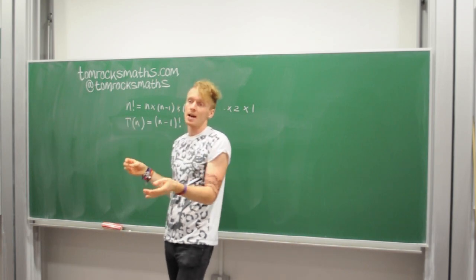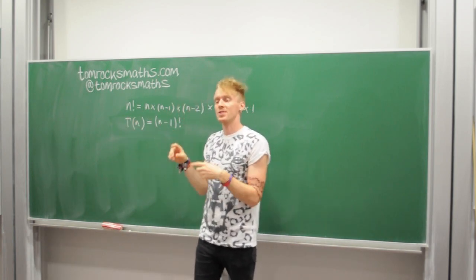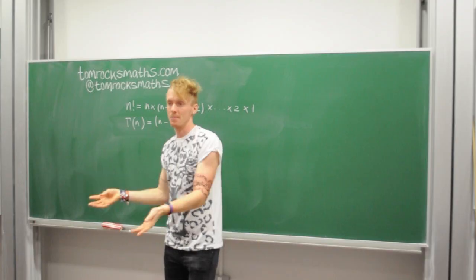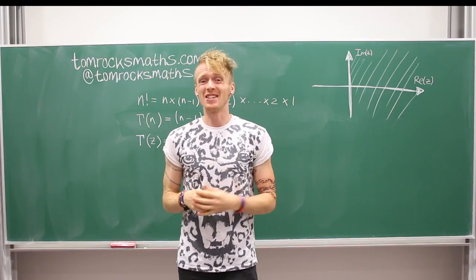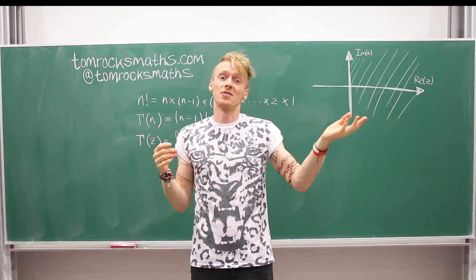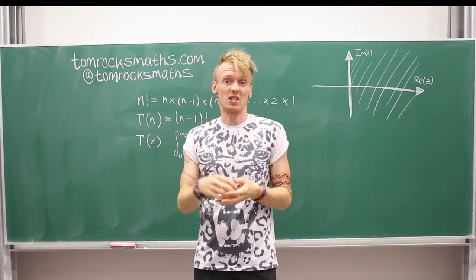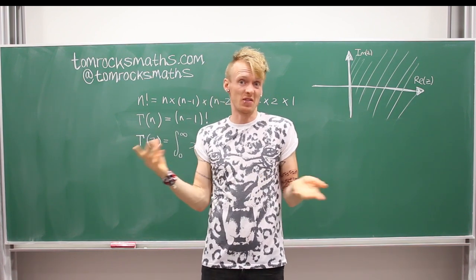So gamma of 6 would just be 5 factorial, which is 5 times 4 times 3 times 2 times 1. So far, by just looking at the positive integers, we haven't really done anything very exciting and the gamma function certainly isn't anything new because it's just the factorial function shifted by 1.